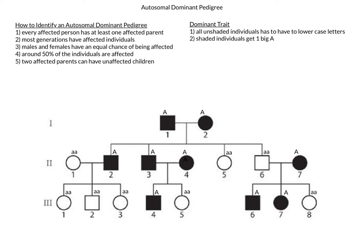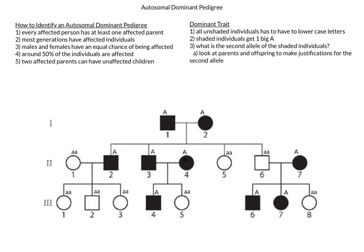With that out of the way, we can now start asking the question: what is the second allele of all of the shaded individuals? We're basically going to look at the parents and offspring of each individual and see if we can determine or justify what their second allele has to be. Keep in mind that we won't be able to justify a homozygous dominant individual, or big A big A, and as such we may end up with some question marks. The question mark simply indicates that it could be either a dominant allele, big A, or a recessive allele, little a.